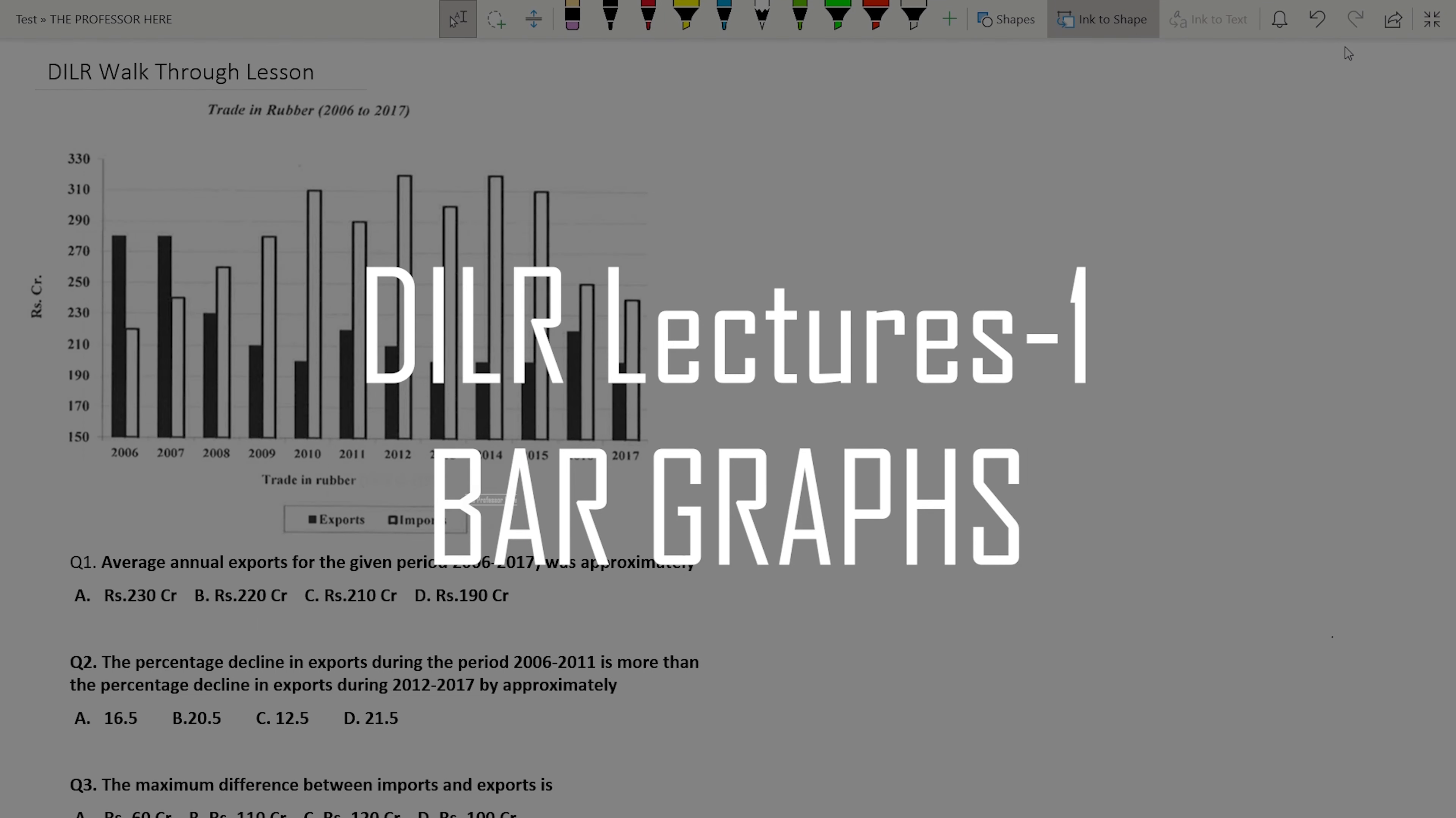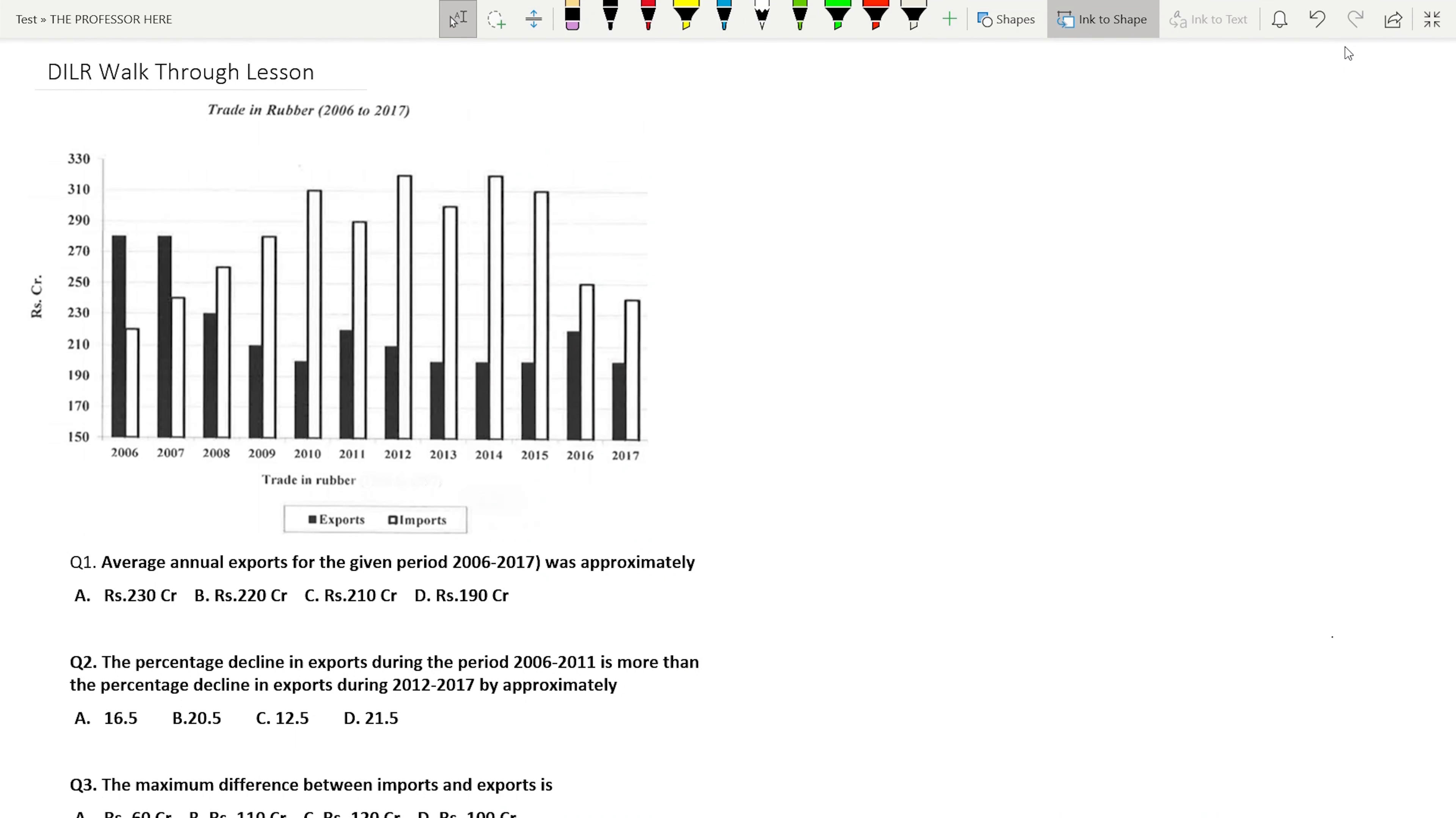Data interpretation and logical reasoning. Data interpretation is basically understanding data. The data can be represented in many different forms or methods, like using a line chart, bar graph, pie chart, tables, or many different forms. We will go through each one of them separately. First, let's look at bar graphs.